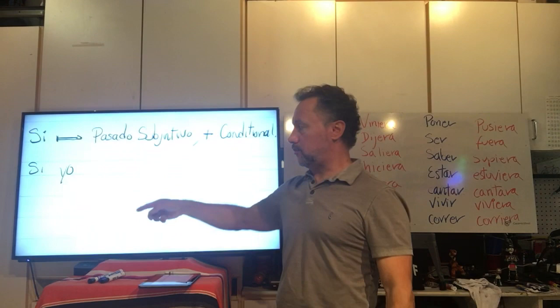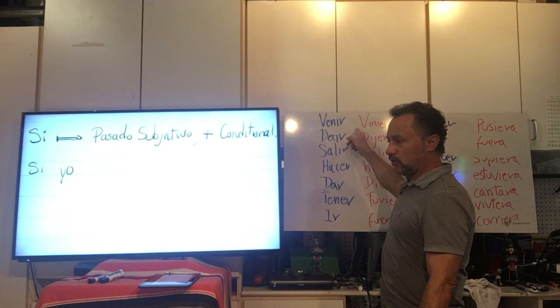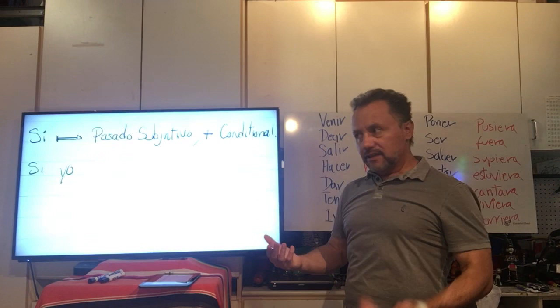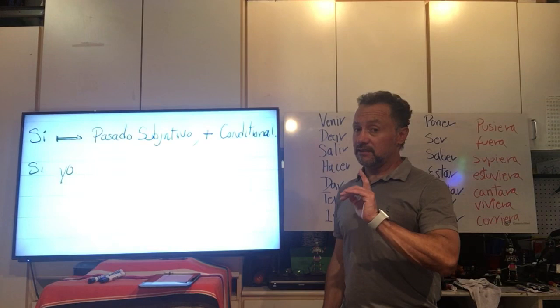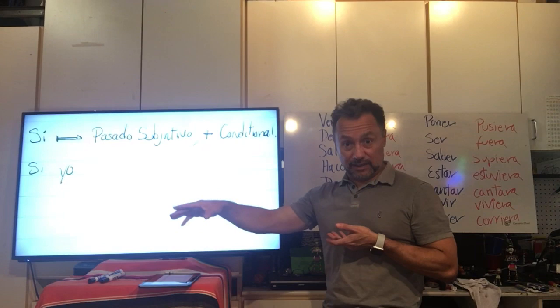So check this out. Si yo viniera, si yo no viniera a la escuela, if I didn't come to school, no me pagarían. Yo no recibiría dinero. Si él no viniera a la clase, tendría una F. He would have an F. Si yo dijera mentiras, yo no digo mentiras, pero si yo dijera mentiras, yo estaría en problemas. I would be, verdad?